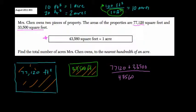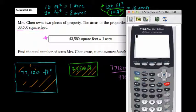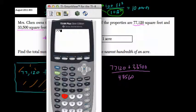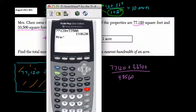Now, that's the same thing down here, except the numbers aren't as friendly. So what I would do is just add up these two: 77,120 plus 33,500, enter, and then divide by 43,560.